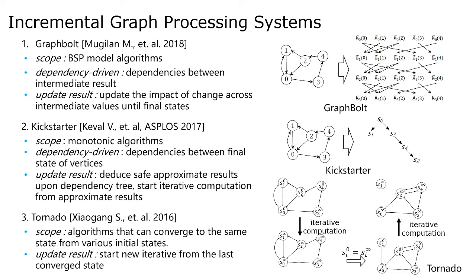We take GraphBot, Kickstart, and Tornado as examples. GraphBot can incrementalize BSP model algorithms by incorporating dependency-driven incremental processing, where it first checks dependencies to capture how intermediate values get computed, then uses this information to incrementally propagate the impact of changes across intermediate values. For monotonic algorithms, Kickstart only tracks dependencies between final states of vertices and deduces the approximate result on edge deletion. Tornado only focuses on graph computations that converge to the same state from various initial states, and updates results by directly starting iterative computation on the new graph with the last converged states.